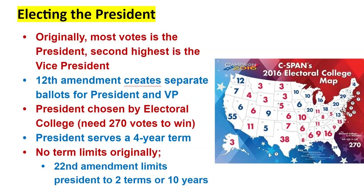If you're voting for the Republican candidate, you're voting for the electors representing the Republican in that state; if Democratic, for the Democratic electors. On December 14th, electors go to their state capitals and cast their votes — 270 needed to win. Those certified votes are sent to the Senate, and the vice president as presiding officer opens and counts them in January, certifying the winner of the Electoral College.